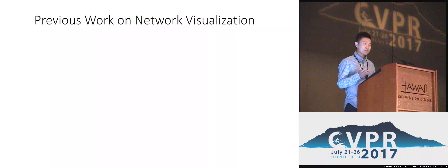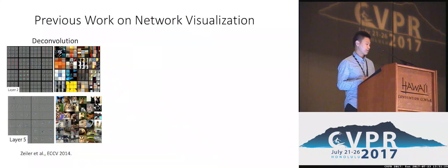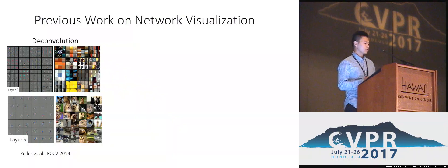To understand what's going on inside neural networks, there is some previous work on network visualization. For example, deconvolution is used to visualize individual units. This shows that units at the lower layers, like layer 2, are detecting texture or surface, while units at the higher layers, like layer 5, are detecting dog heads or bicycle wheels — more semantic and meaningful concepts.